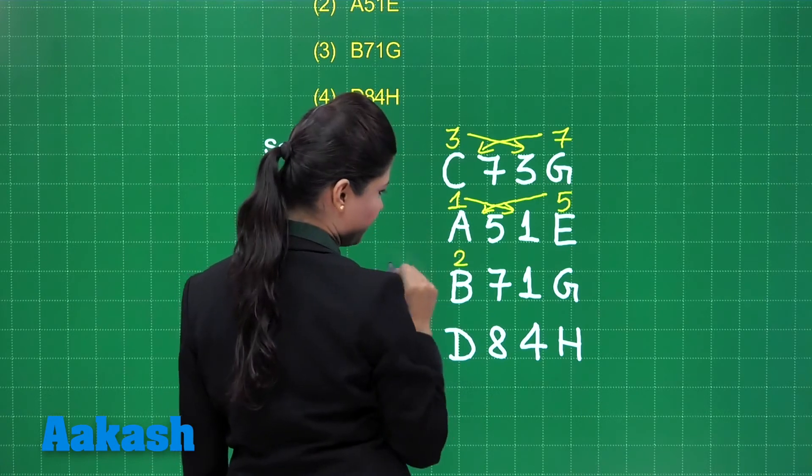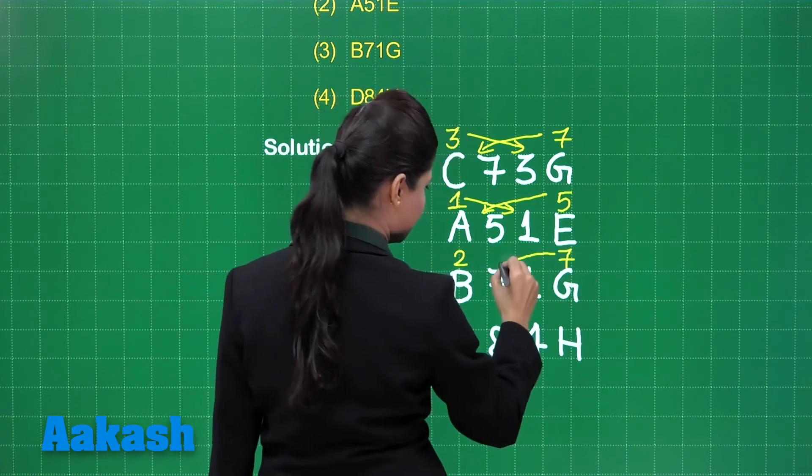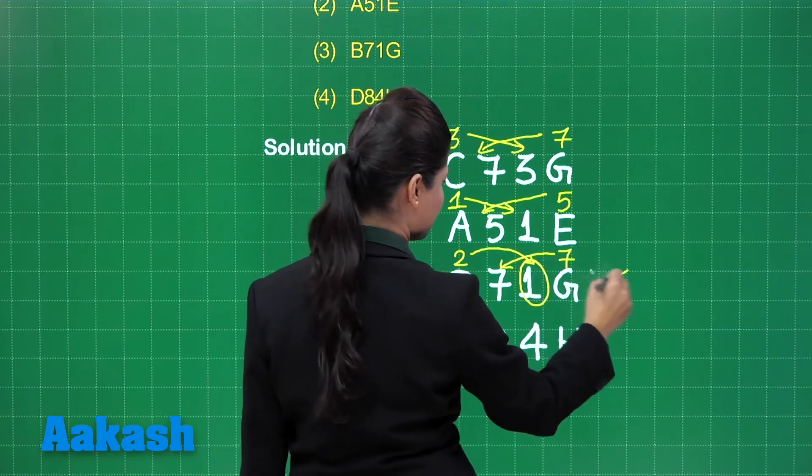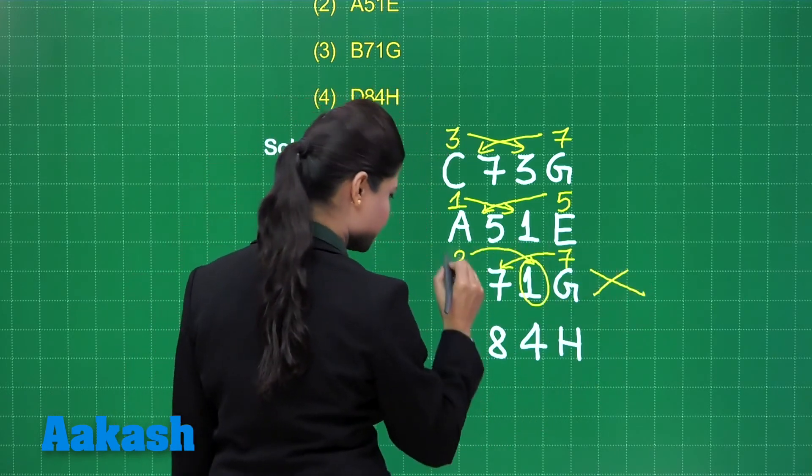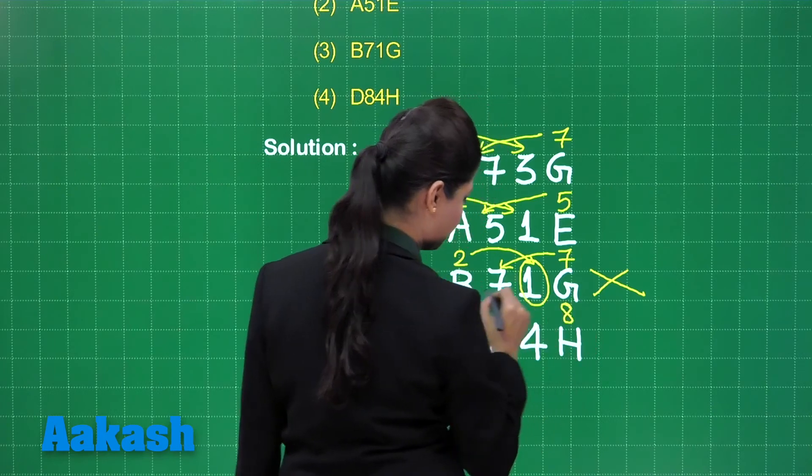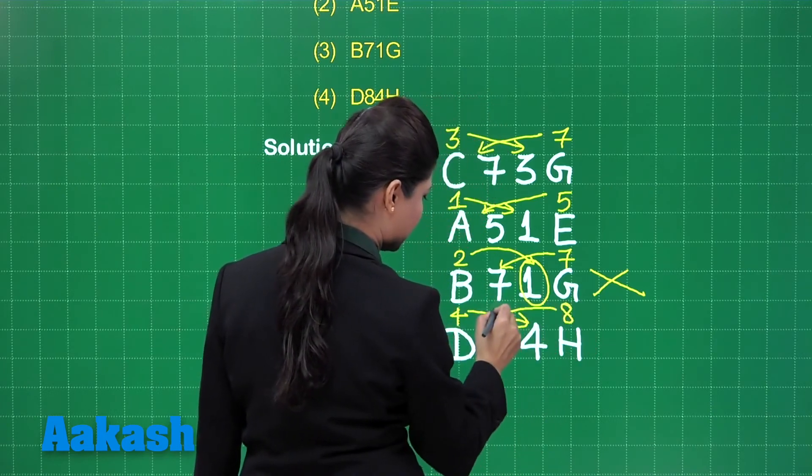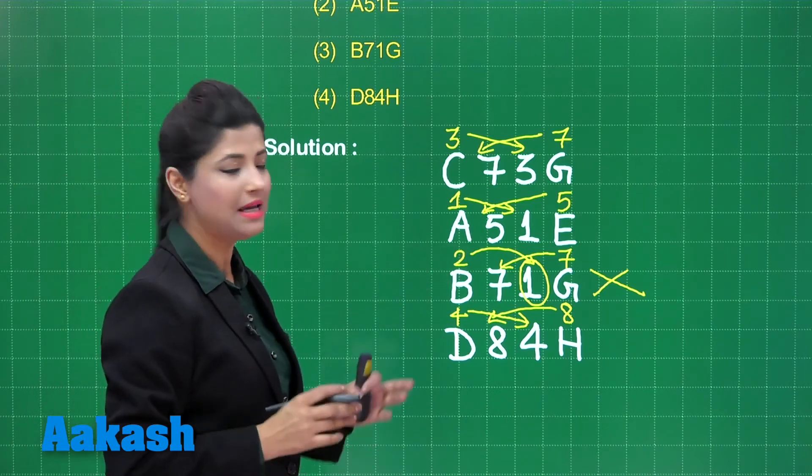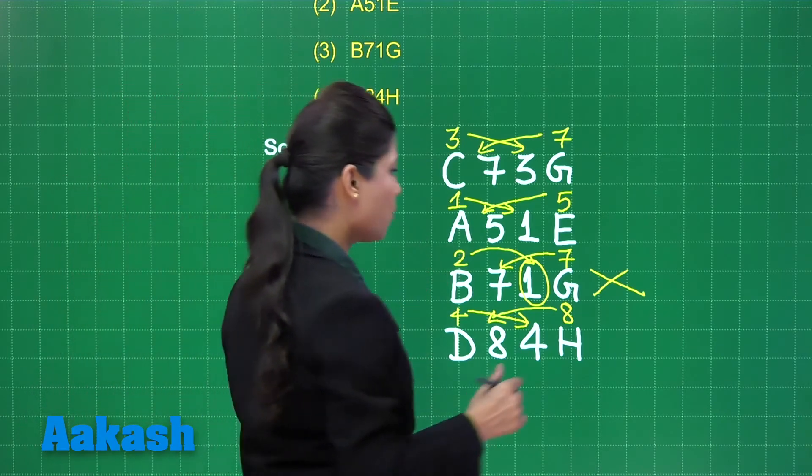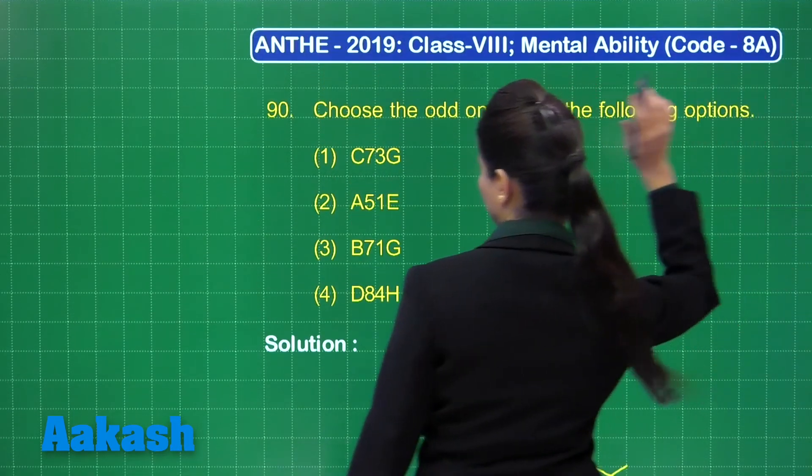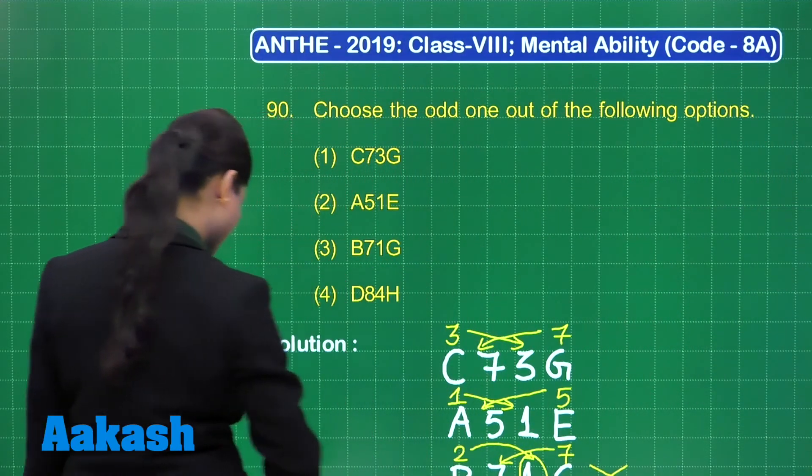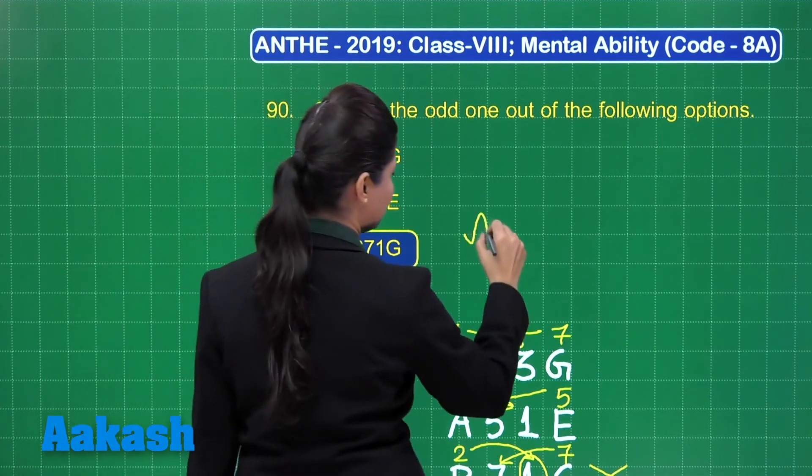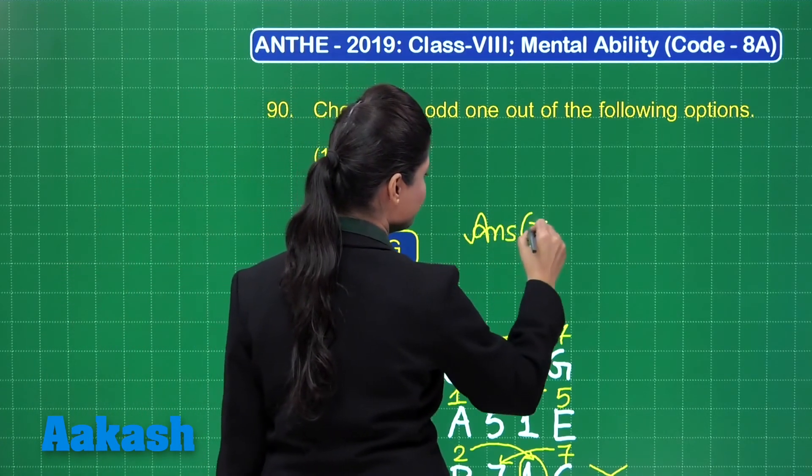And here, B comes at 2 alphabet position, G comes at 7. 7 is followed but 2 is here, not followed. So this is not following this. Let us check here, D comes at 4th alphabet position, H comes at 8. So this is also following the same pattern. That means only one term is there which is not following the same pattern. It is B71G and it is present here in the third option. So the odd one out here is this third option, B71G. So you can definitely mark your answer as option 3.